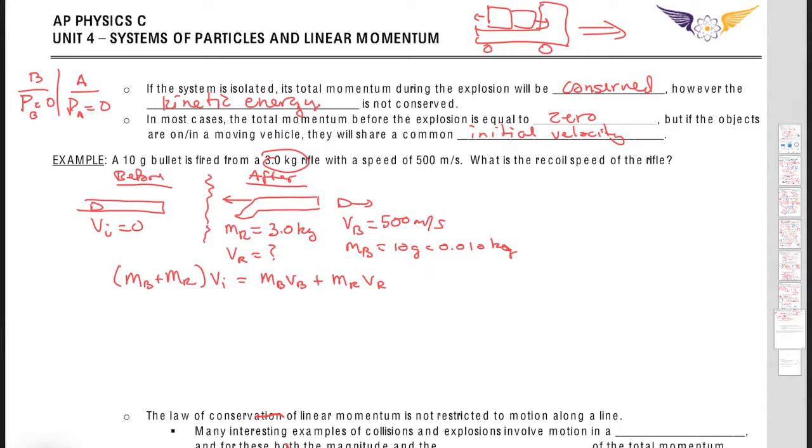Right, and this is MB VB plus MR VR is our after side. And so what happens is this side goes away because this value is 0. So I'm going to say 0 equals MB VB plus MR VR. And I'm going to solve this equation for VR.